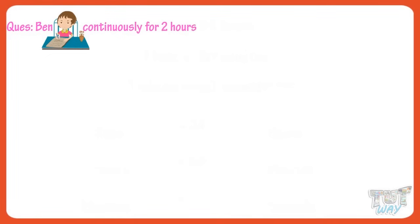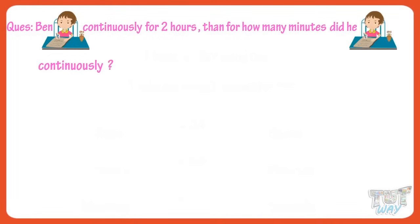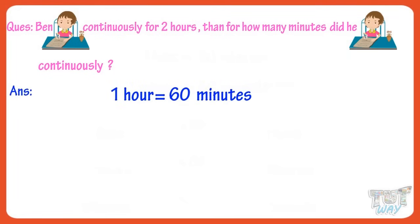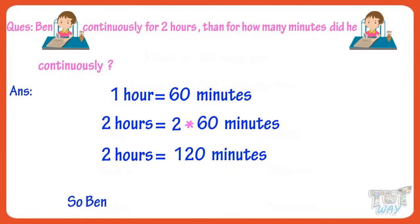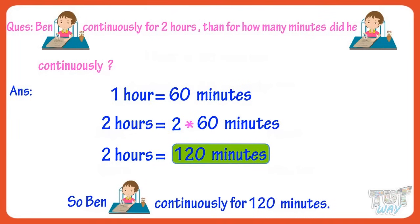Ben wrote continuously for two hours. Then how many minutes did he write continuously? One hour equals 60 minutes. So two hours equals 60 multiplied by 2, equals 120 minutes. So Ben wrote continuously for 120 minutes.